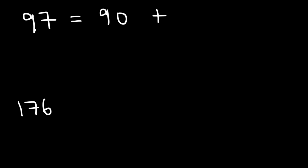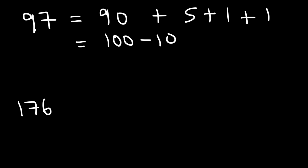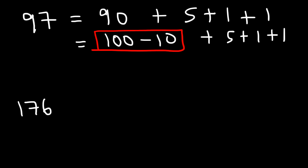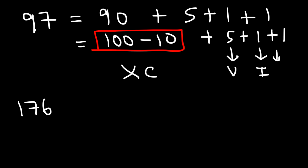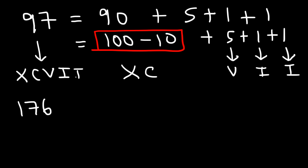Let's try 97 and 176. For 97: it's 90 plus 5 plus 1 plus 1. For 90, it's easier to say 100 minus 10. Since that's subtraction, we reverse the letters: C is 100, X is 10, so we write XC for 90. Then V is 5, I is 1. So 97 is XCVII.